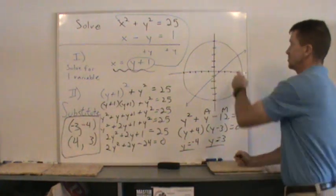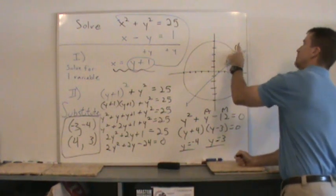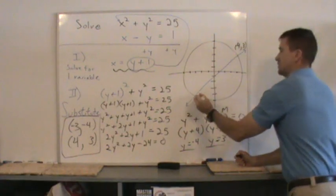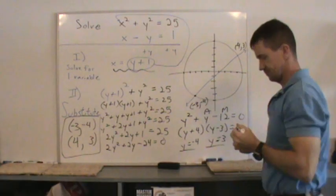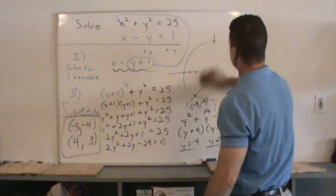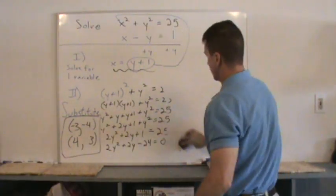And if you look at the picture, that's what we have here. This is the point of 4 comma 3. And this point right here is negative 3 comma negative 4. And we'll do one more. We'll do one more of this.